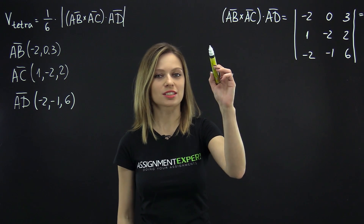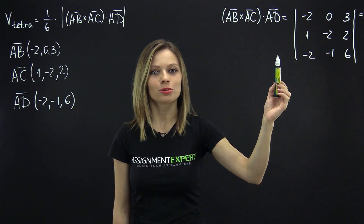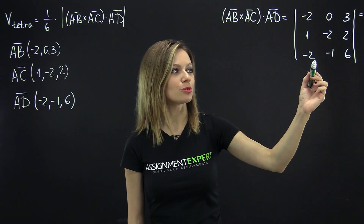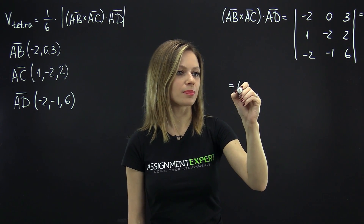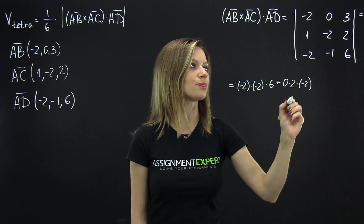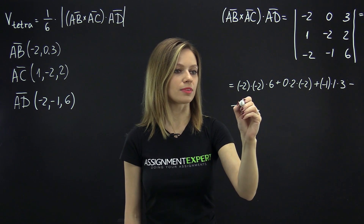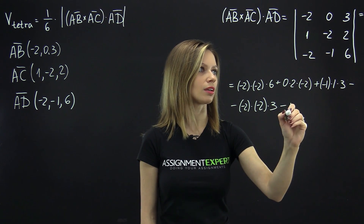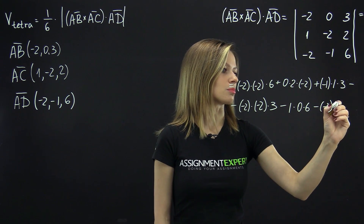Let's calculate the scalar triple product of the vectors separately. AB cross AC dot AD is equal to the determinant of the matrix of coordinates of these vectors. So we have the determinant of: row 1: -2, 0, 3; row 2: 1, -2, 2; row 3: -2, -1, 6. Using Sarrus' rule: negative 2 times negative 2 times 6, plus 0 times 2 times negative 2, plus negative 1 times 1 times 3, minus the remaining terms.